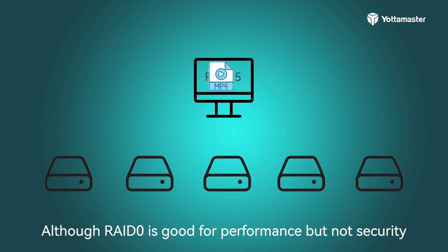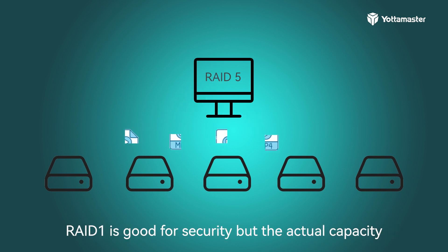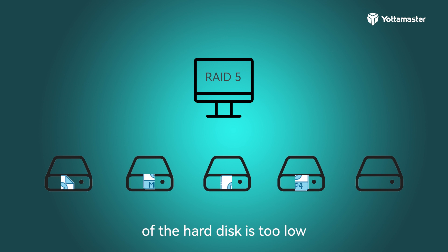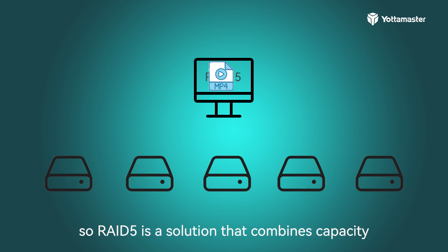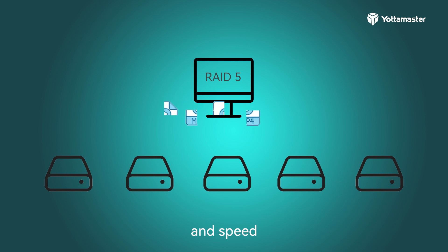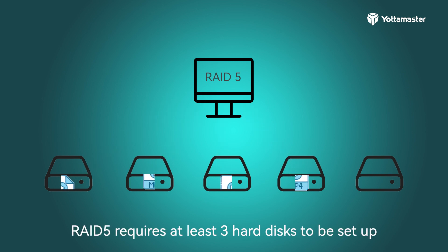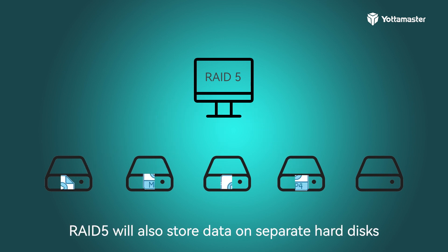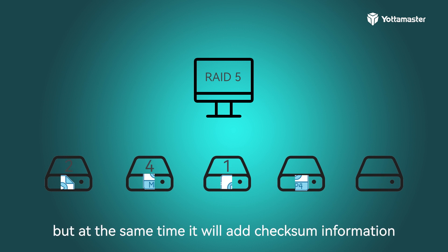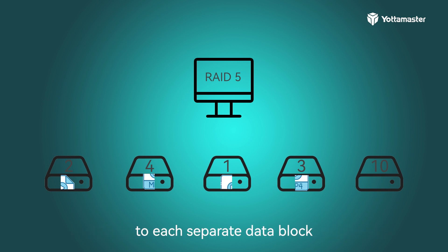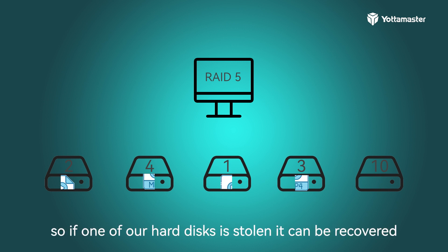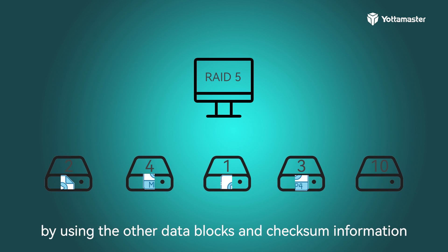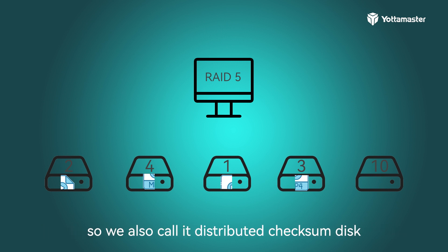Although RAID 0 is good for performance but not security, and RAID 1 is good for security but wastes half the disk capacity, RAID 5 is a solution that combines capacity, security, and speed. RAID 5 requires at least three hard disks. It stores data across separate hard disks, but at the same time adds checksum information to each data block, so that if one hard disk fails, the data can be recovered using the other data blocks and checksum information. We also call it a distributed checksum disk.